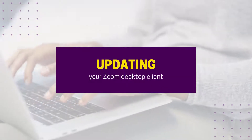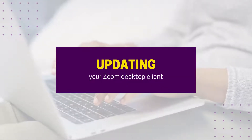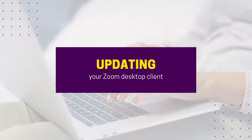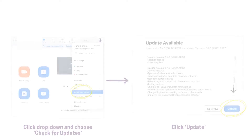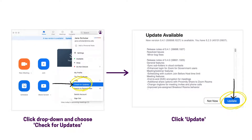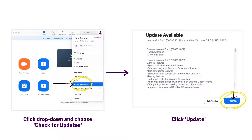You can manually check for Zoom updates in order to make sure you're running the latest version so you can stay secure. Here's how. First, launch your Zoom desktop client. Then open the profile drop-down menu by clicking your profile photo in the top right corner. Then click check for updates. If an update is available, click update and follow the installation instructions on your device.